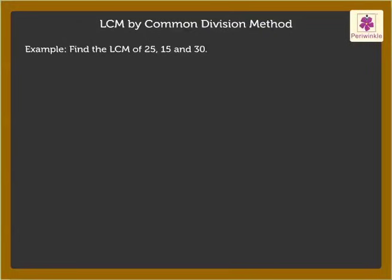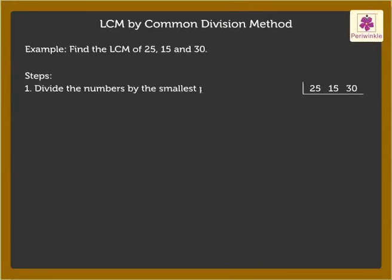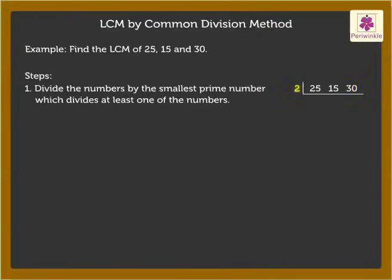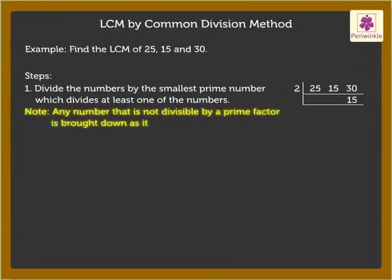Here, we would be finding the prime factors of all the numbers together. Step 1: Divide the numbers by the smallest prime number which divides at least one of the numbers. We begin with the smallest prime number, that is 2. Any number that is not divisible by a prime factor is brought down as it is. Here, numbers 25 and 15 are not divisible by 2, so we bring them down as they are.